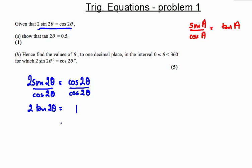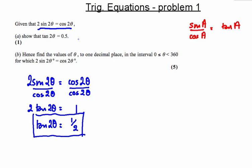And so, dividing both sides by two now, what I will see is this — and that's my solution to part a. Next thing I need to do is find angles that give the tangent of a half. I can ignore the idea of two theta for now.